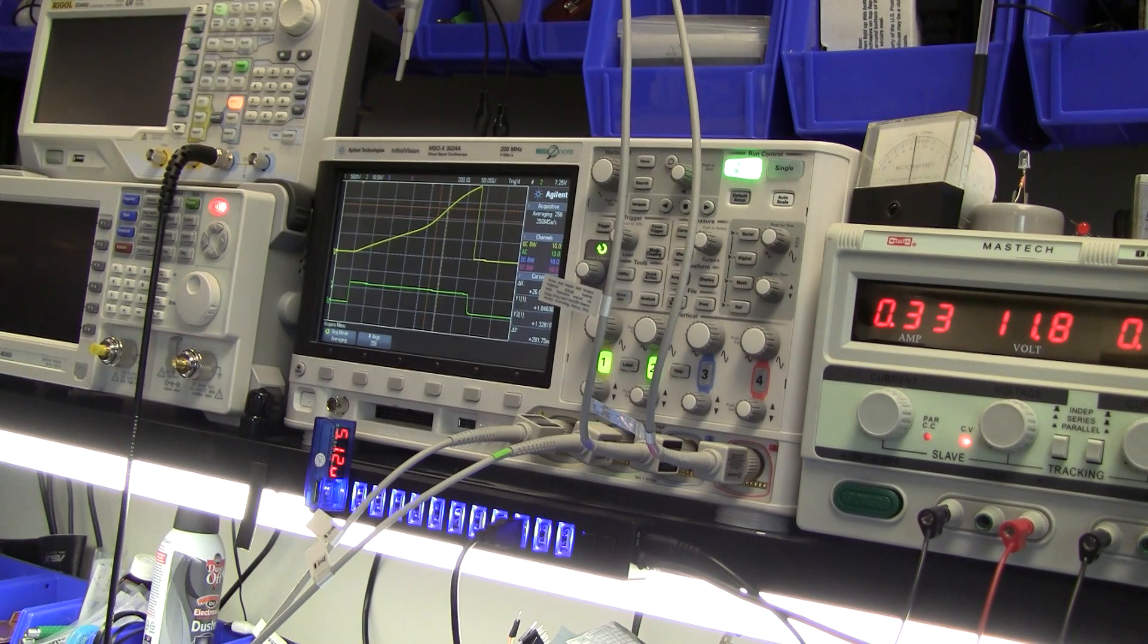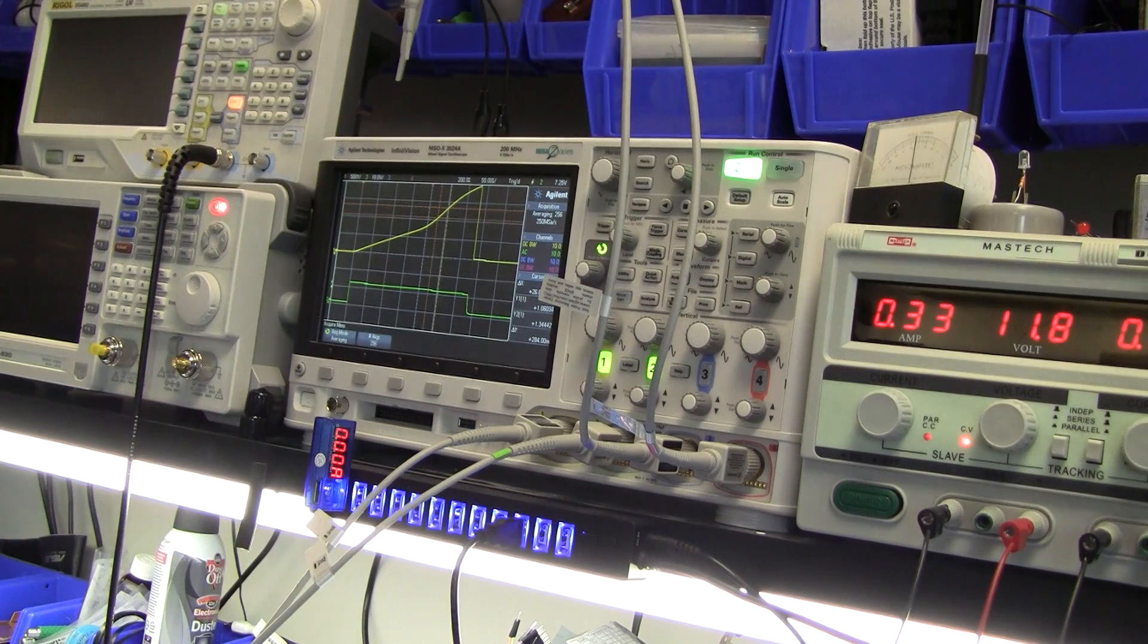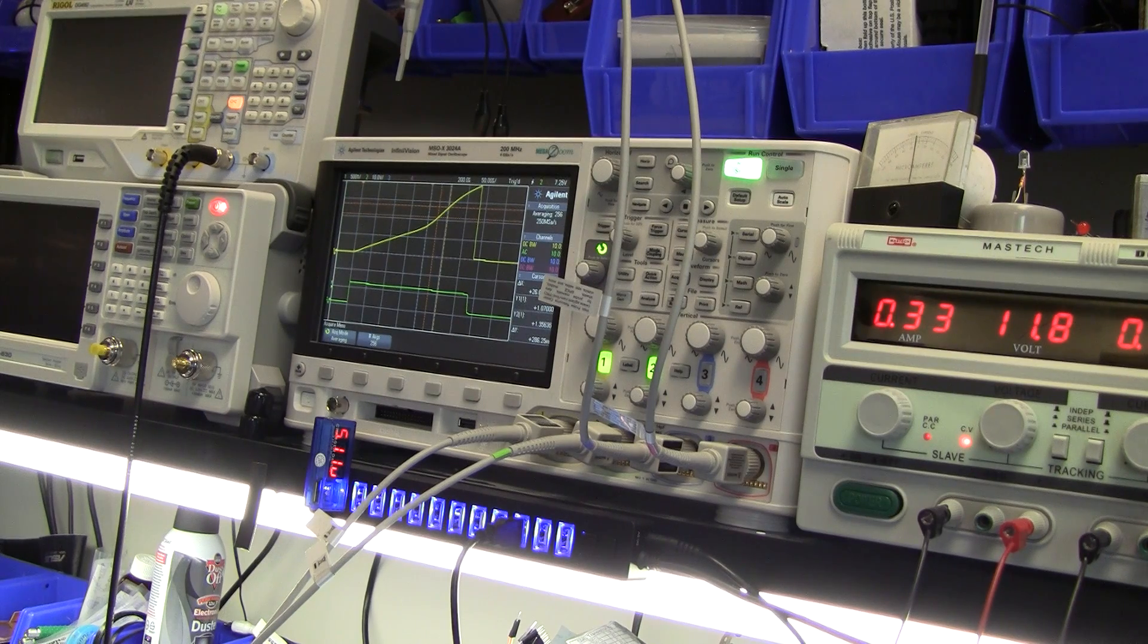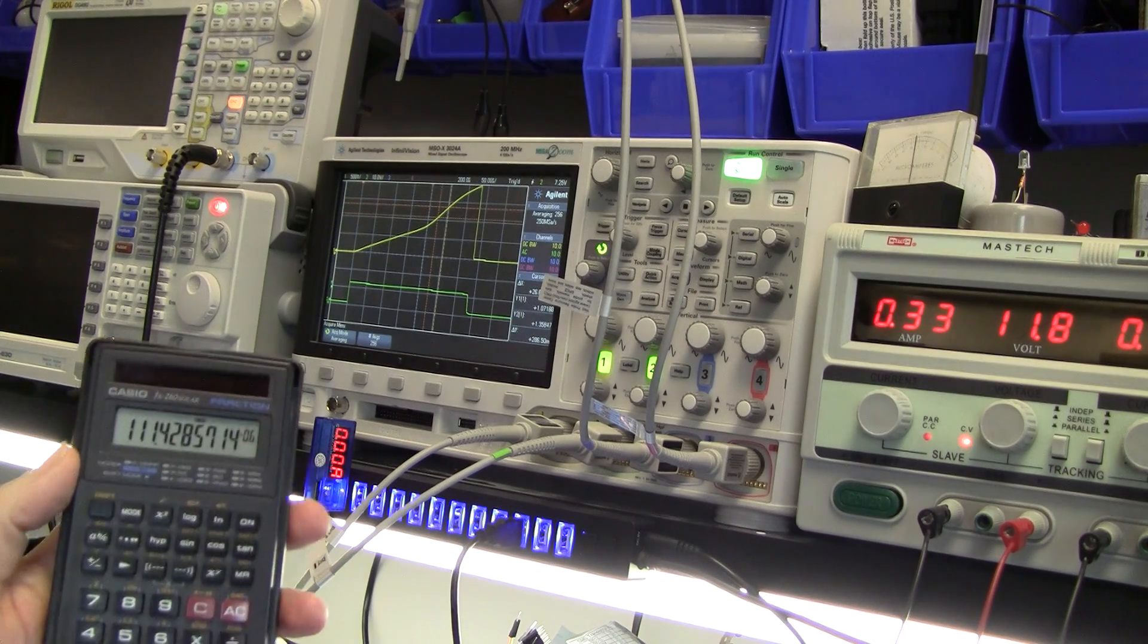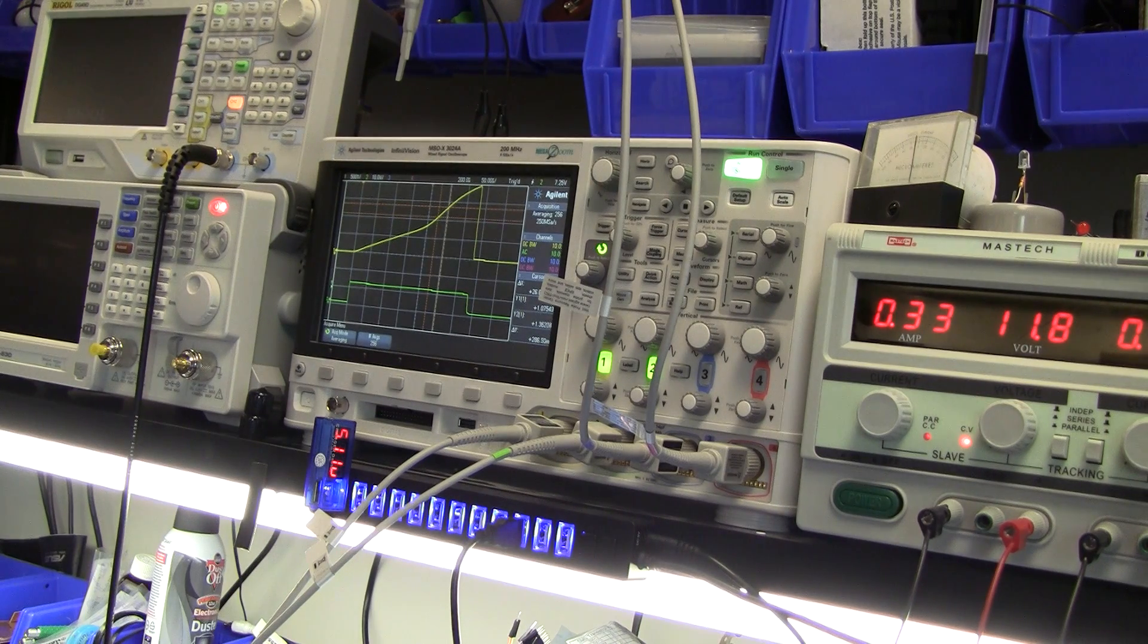So there's 2.8 amps increase in current over a timescale of 26 microseconds. Maybe it was 107,000 amperes per second, so that's 111 microhenries. So you can see the inductance has decreased quite a bit as it saturates.